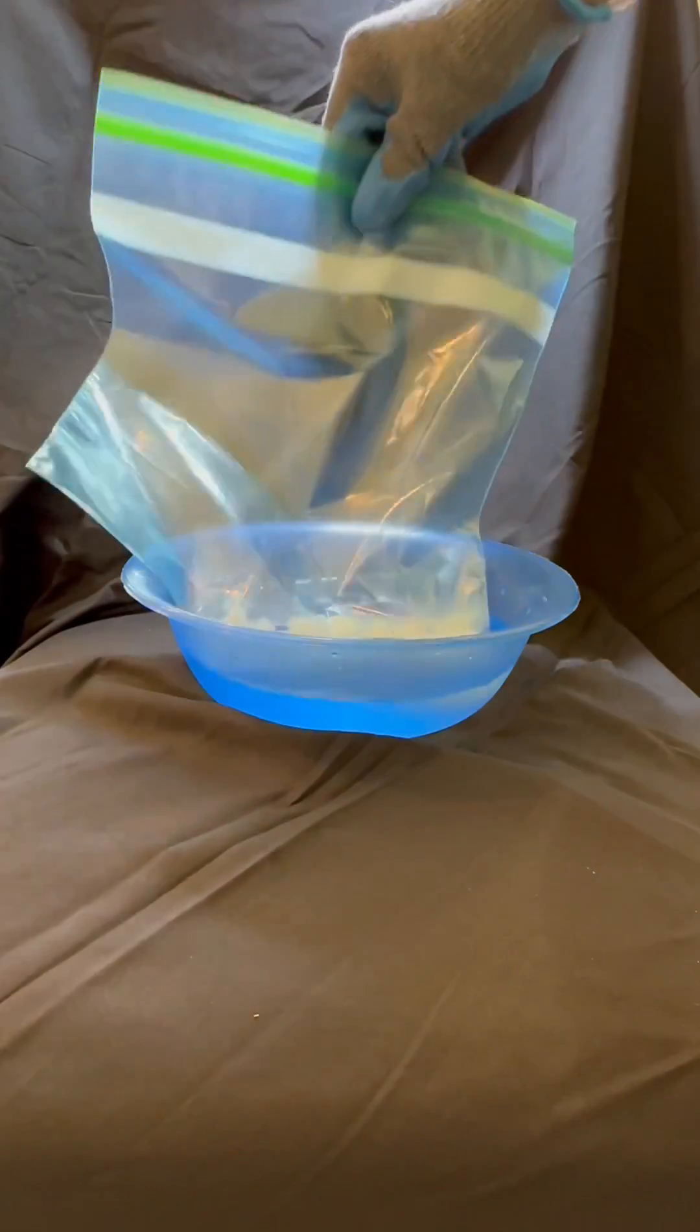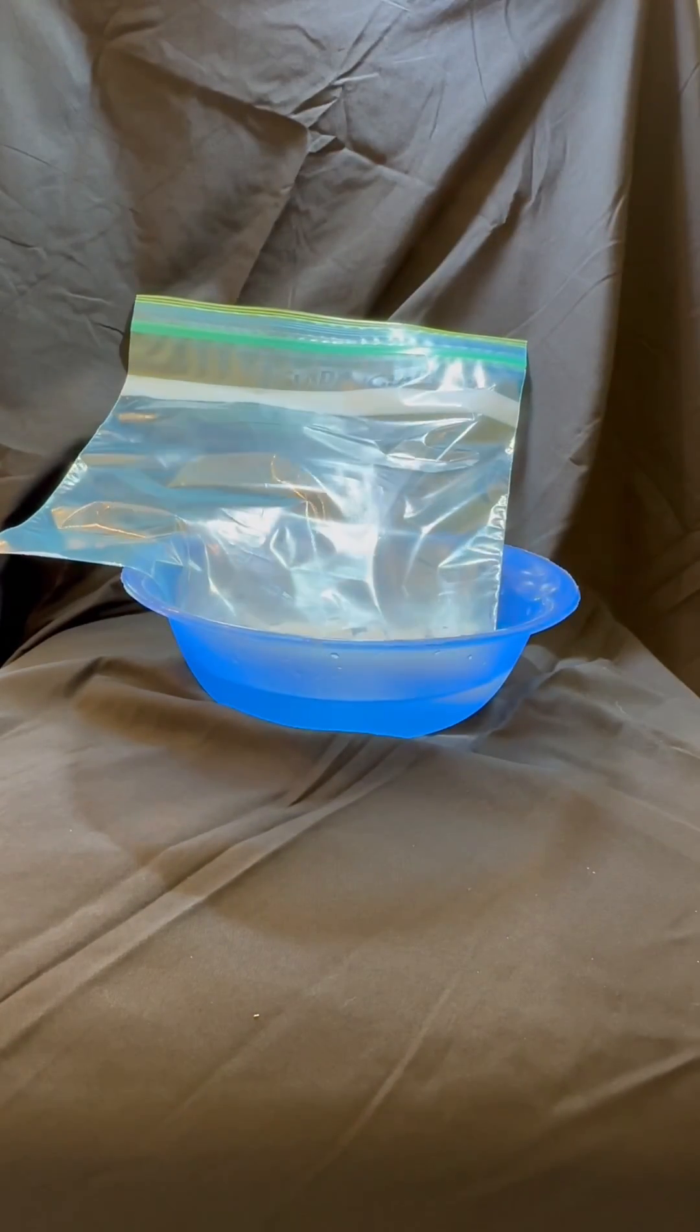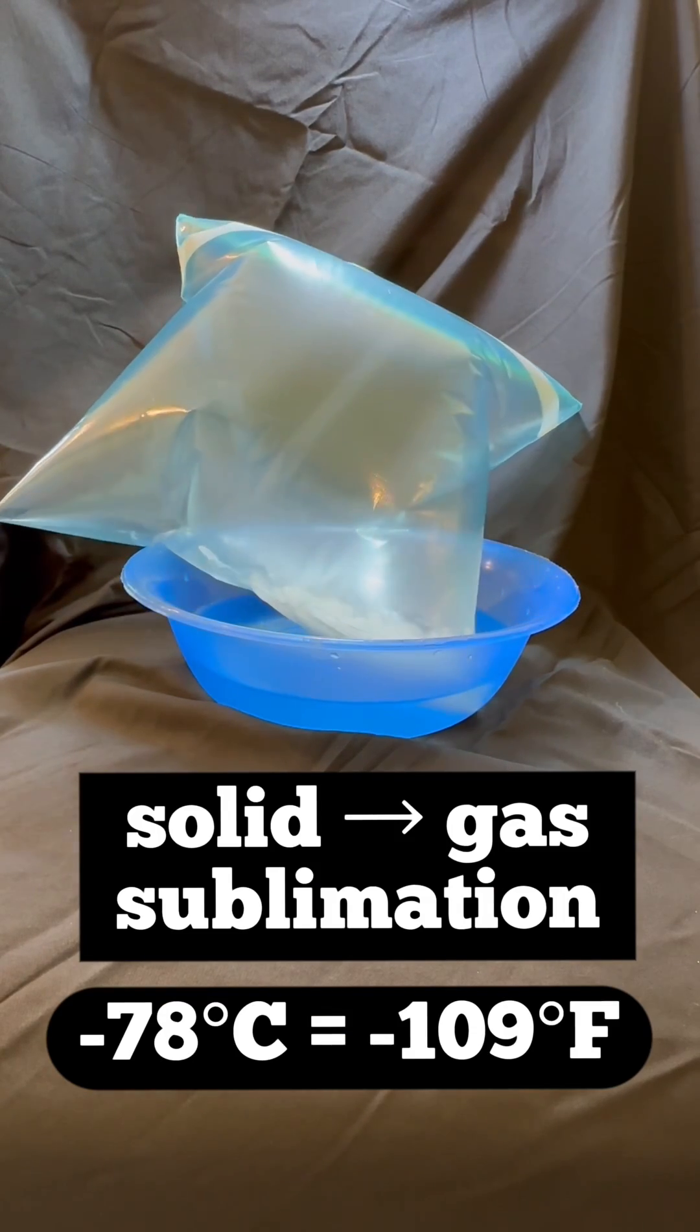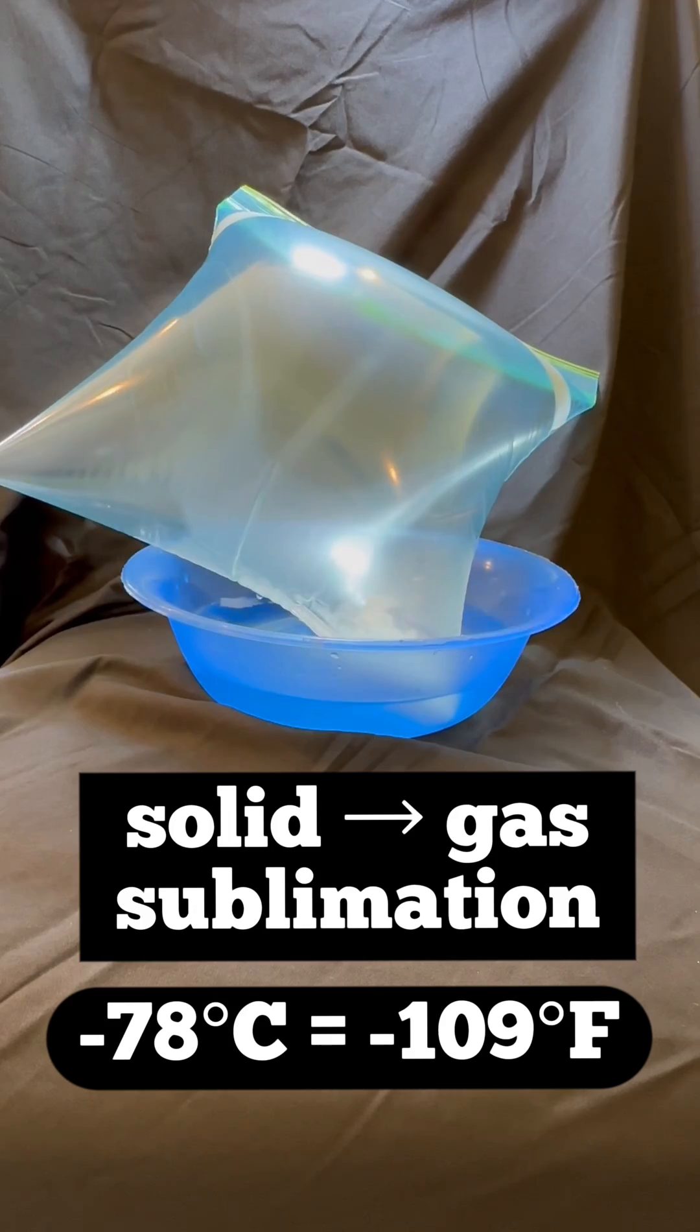We first need to recognize that dry ice or solid carbon dioxide goes directly from a solid to a gas at temperatures above negative 78 degrees Celsius. This process is known as sublimation.